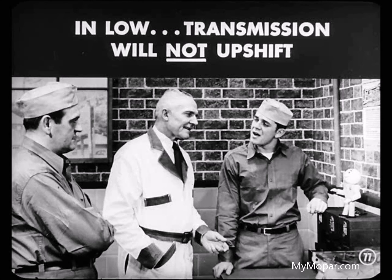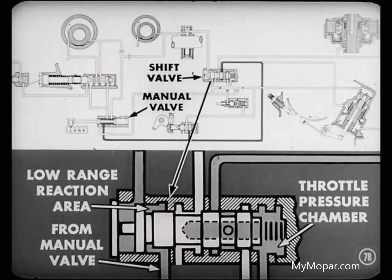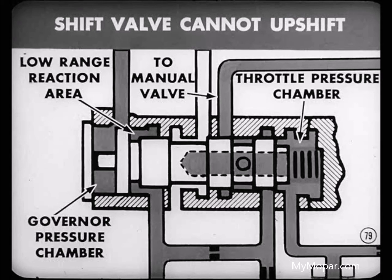What prevents it from upshifting? Well, when the selector lever is moved to the low position, line pressure from the manual valve is admitted to the throttle pressure chamber of the shift valve. Also, another oil passage is uncovered, admitting oil at line pressure directly to the low range reaction area of the shift valve. Line pressure in these two chambers creates a force which is greater than the maximum force of governor pressure. This means that the shift valve is held in the downshift position and cannot upshift while the selector lever is in the low range.